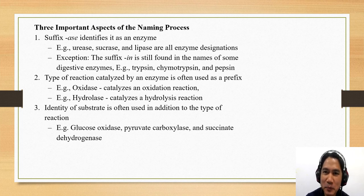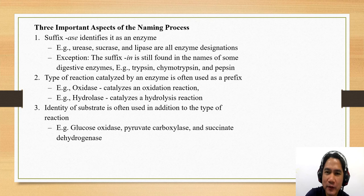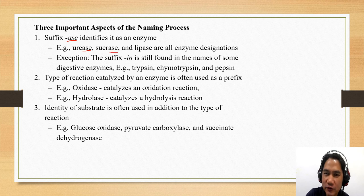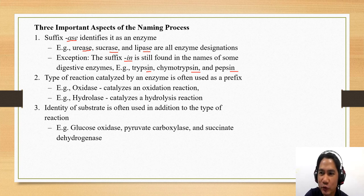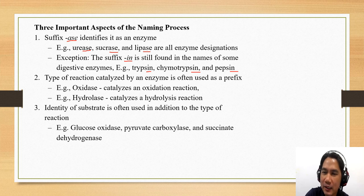These are the three important aspects on how to name enzymes. The first is we identify the substrate and add the suffix '-ase'. Examples: urease for urea, sucrase for sucrose, lipase for lipids. Not all enzymes end with '-ase' — there are some that end with '-in', for example trypsin, chymotrypsin, and pepsin. All of these are proteolytic enzymes, meaning they catalyze the breaking of protein.